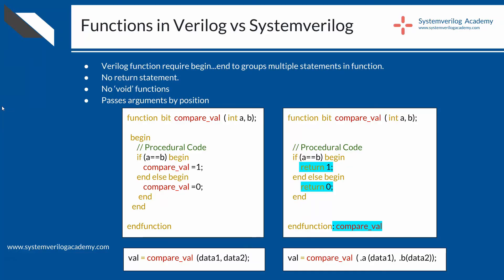Functions in Verilog and SystemVerilog. The syntax of using functions in Verilog is different from that in SystemVerilog. Here is the same function written in both. In Verilog, you need to use begin-end keywords to use multiple statements in a function, whereas in SystemVerilog it is not needed. The next difference is there is no return statement in Verilog, therefore the function or task will always execute till its last statement.